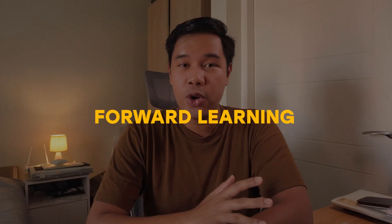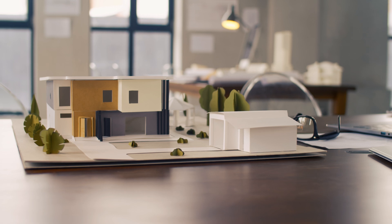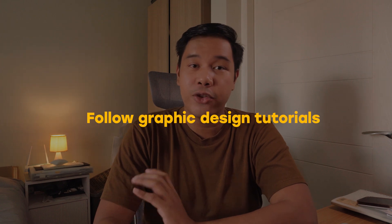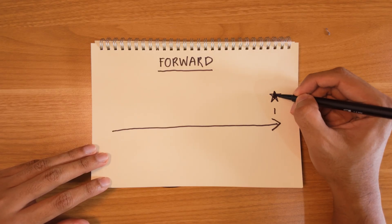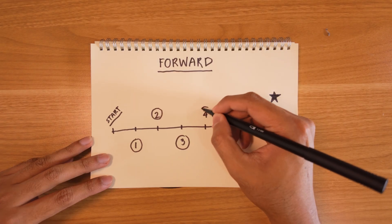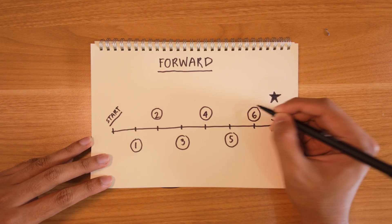Let's start with the first one, which is the forward learning approach. Forward learning simply means a structured, step-by-step approach in learning. Think of something like building a house — you first lay down the foundations, and then you build the walls, the windows, and then you go to electricity and plumbing, and then you do the finishing. The most common way of forward learning is by following graphic design tutorials, where there is a clear expectation of what the output will be, and then they break it down into small, easy steps that you can easily follow along.